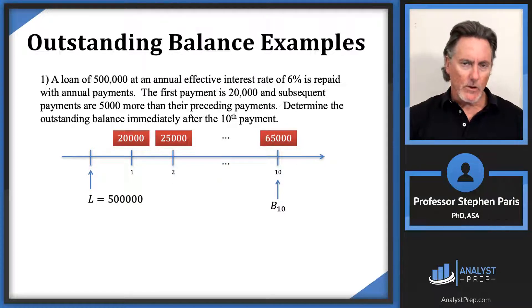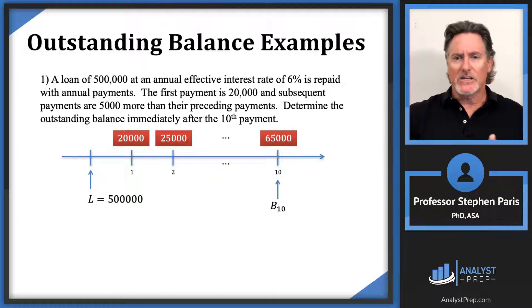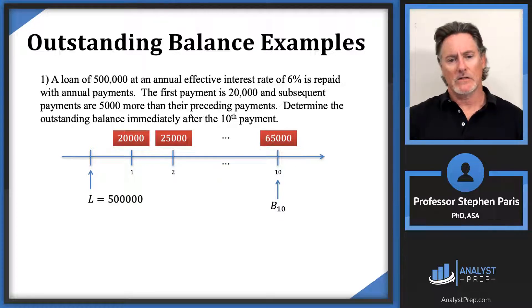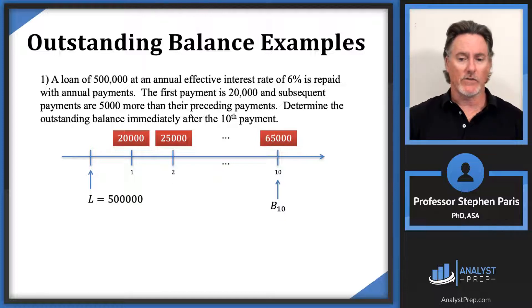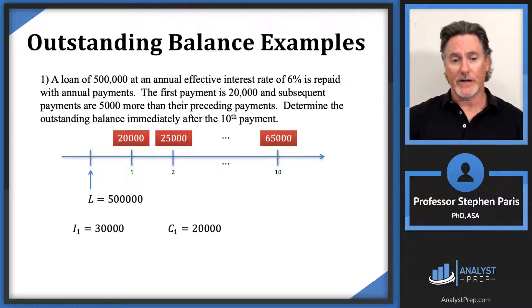Before getting to the problem, let me make a comment about what's going on here. The payments are increasing substantially, and this type of situation is common with such problems. The amount of interest owed at time 1 is $500,000 times 6%, which equals $30,000. But the actual payment is only $20,000, so you're not even paying enough to cover the interest at that first payment.